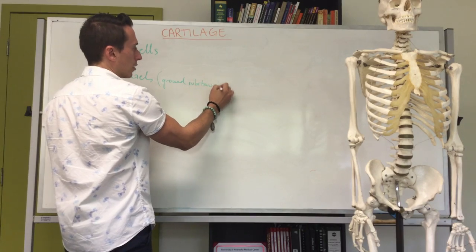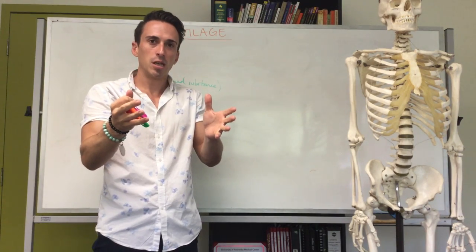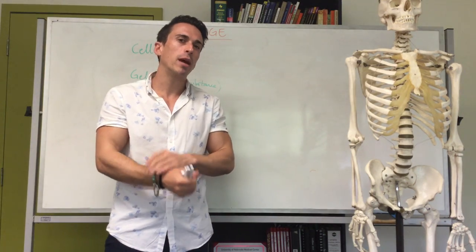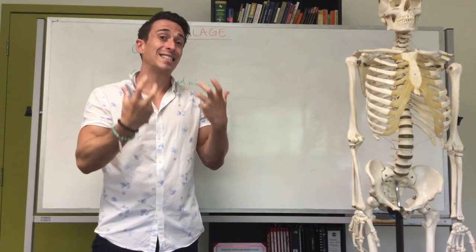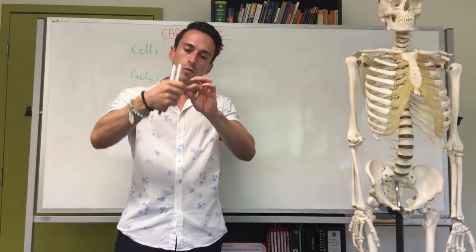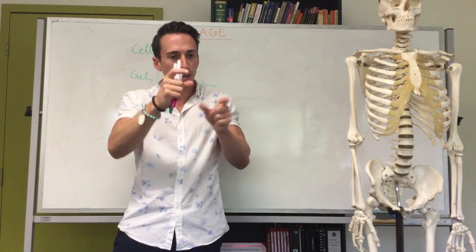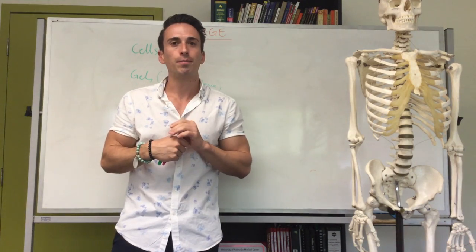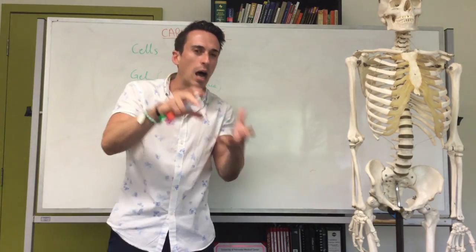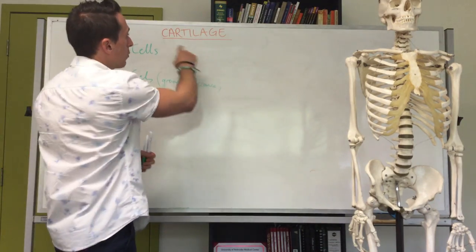Ground substance — I like to think of it as jelly. If you make jelly on a plate it doesn't have much structure; it's very wobbly and easy to break apart. But if you wanted to make that jelly more structurally sound, you could embed fibers in it — pieces of wool, rubber bands, tiny steel rods. Embedding those in the jelly makes it stronger, and that's what makes certain connective tissues more fluid and others harder or semi-solid: the types of gels and fibers they contain.